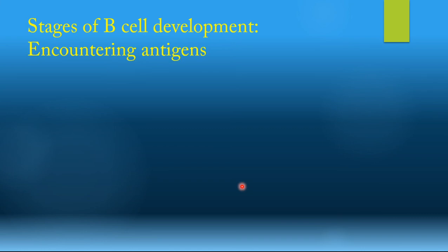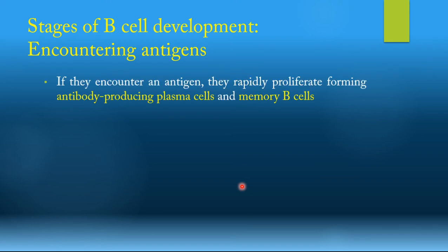If follicular B cells do not encounter any antigen for the upcoming few months, they will undergo apoptosis. But if they do encounter antigen, they will rapidly proliferate, forming either antibody-producing plasma cells or memory B cells. And even these plasma cells can go on to form memory B cells.